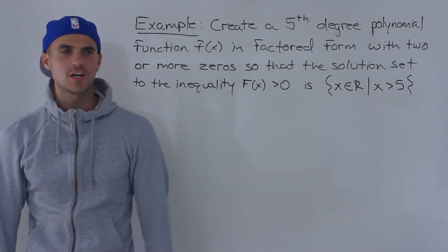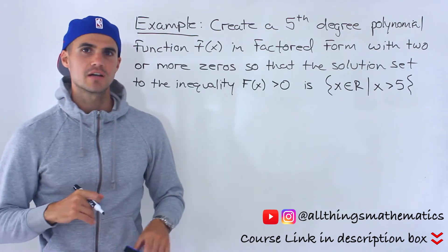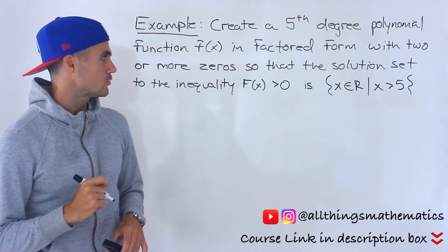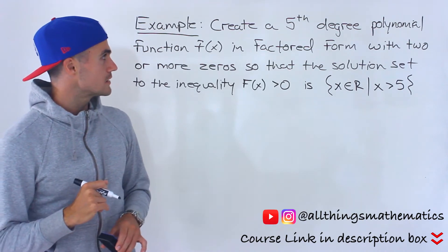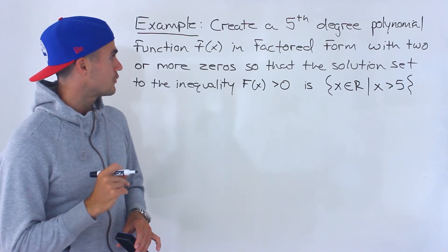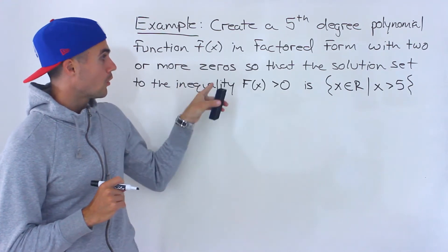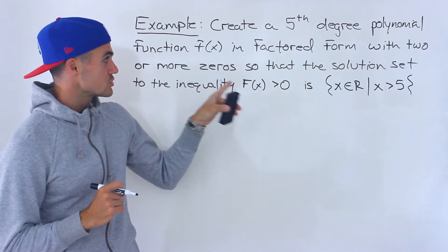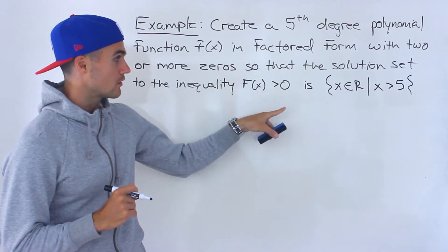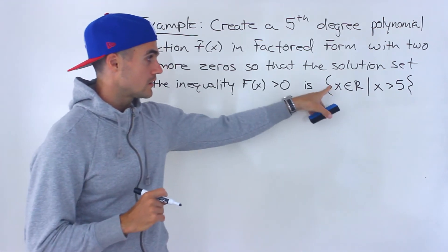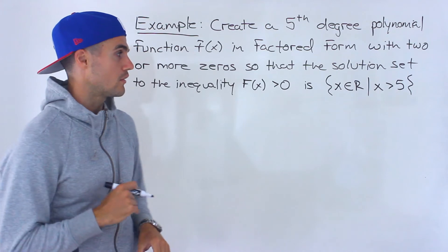Welcome back. This question was sent to me by a student — I thought it was a pretty cool and unique one, so I decided to make a video for it. We have to create a fifth degree polynomial function f(x) in factored form with two or more zeros, so that the solution set to the inequality f(x) > 0 is: x is an element of real numbers such that x is greater than five.